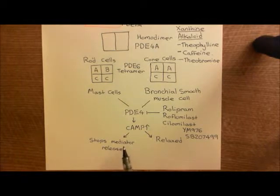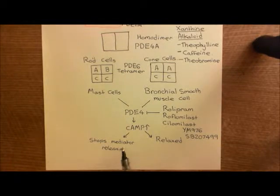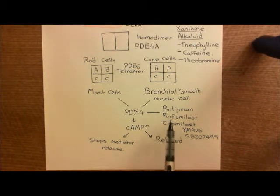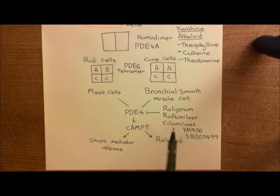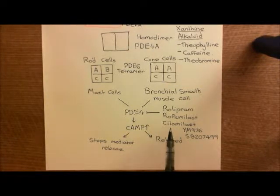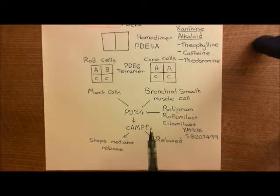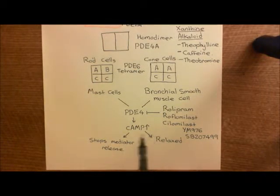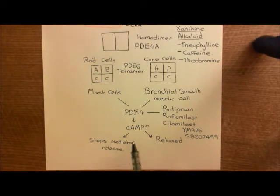In the mast cells, this stops them from being able to release huge amounts of mediators which cause the asthmatic attack. If you have been taking the phosphodiesterase inhibitor prophylactically every day, then when you get exposed to the allergen, even though the allergen will bind to the IgE on the surface of the mast cell bound to the FcεRI receptor, it will activate the mast cell, but the mast cell will be stabilized and it won't release as much of the mediators, which will reduce the scale of the asthmatic attack.